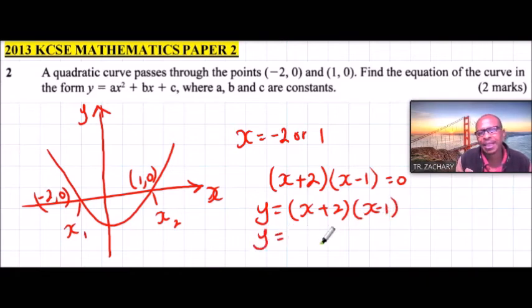then we have y is equals to, x times x, that will give us x squared, this will be x multiplied by minus x, that will give us minus x, then we have 2 multiplied by x, that will give us plus 2x, and we have 2 multiplied by minus 1, that will give us minus 1.